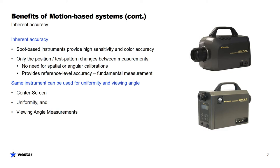What this means is that you're looking through the same optics, the same measurement spot, and the same detector — so the measurement side does not change from measurement to measurement, just the position of the display under test changes. This provides reference-level accuracy and it becomes a fundamental measurement. For an array-based instrument, you have to apply secondary calibrations to compensate for differences between photo sites on the detector, looking through optics at different angles, things like that. Also, on a motion-based system, you can use a spot photometer — the same instrument for your center screen measurements, your gamma curves, your color gamut, your sequential contrast ratio — and you can move it for uniformity and for viewing angle measurements. So one instrument can cover all those measurements.